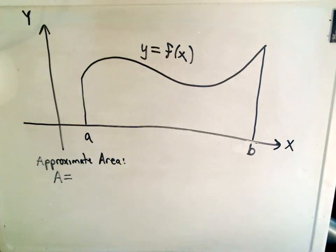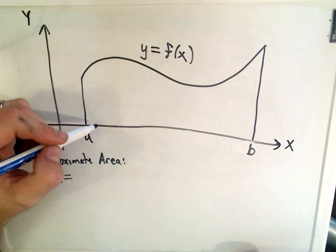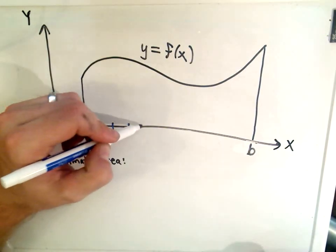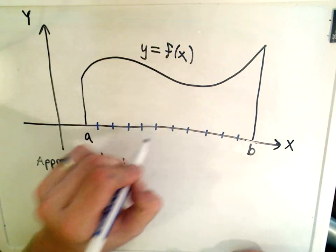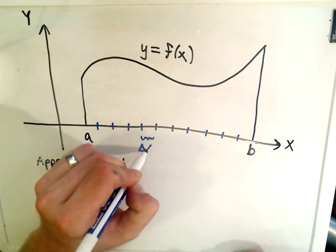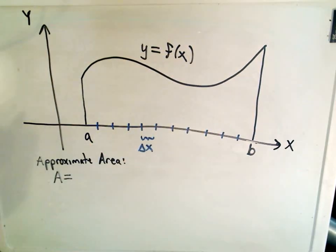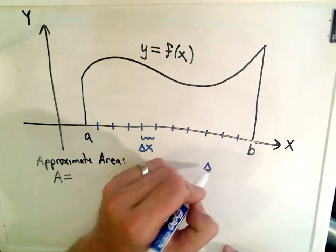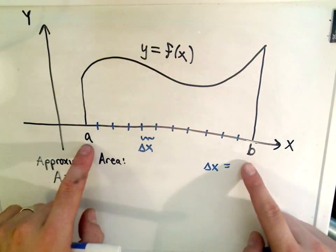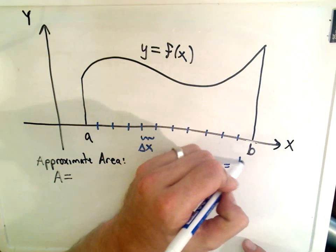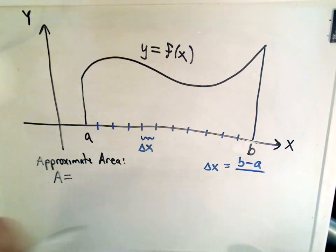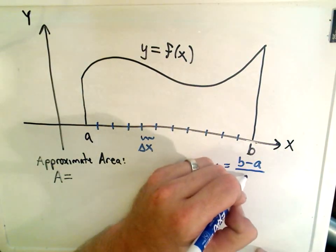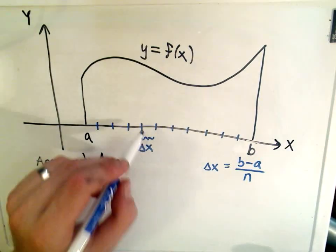What we do is we chop up our interval from a to b into n pieces of equal width. Each piece is going to have width labeled delta x. Notice delta x is going to have value — well, the length of the interval is b minus a, and since we're chopping that interval up into n pieces, the width of each piece would be b minus a divided by n. So that's going to be the width of each little piece.